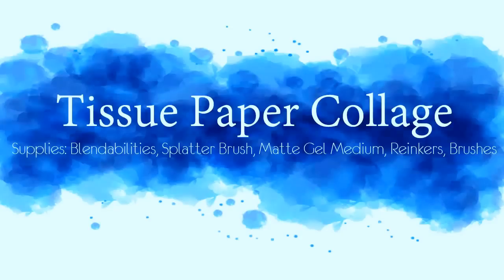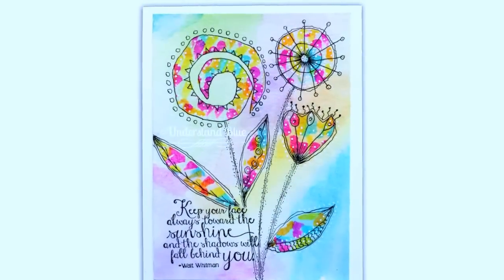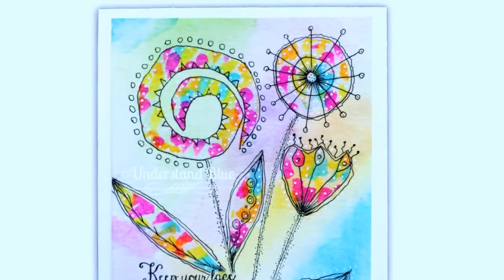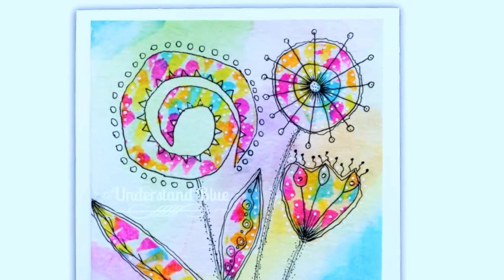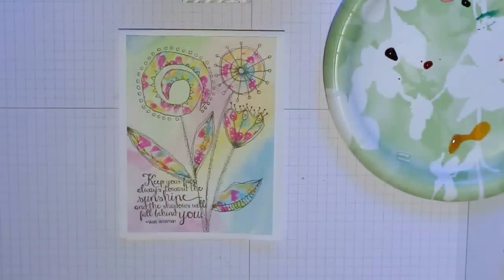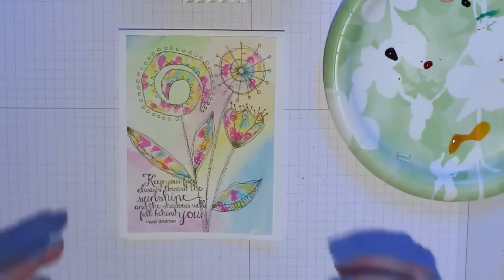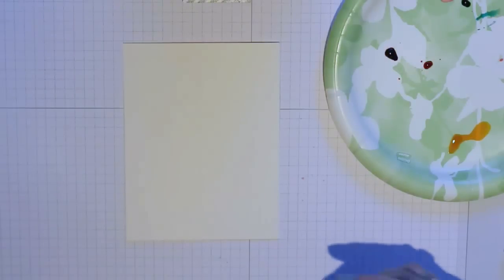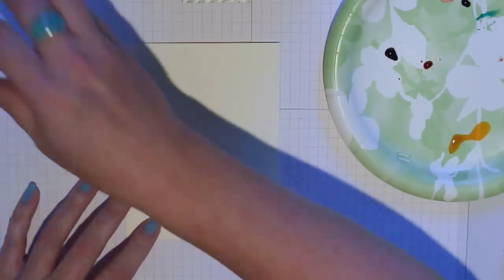In today's tutorial we're going to learn a technique for doing a mixed media tissue paper collage. For this project you'll need white tissue paper, alcohol markers, a fine line black pen, and some gel medium. This is the card that I'm going to make today and you're going to be amazed at how simple it is and how few supplies you really need.